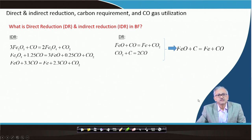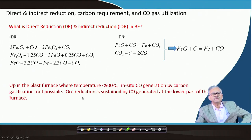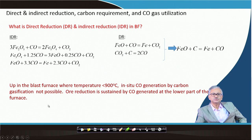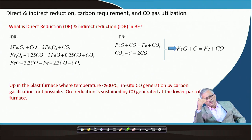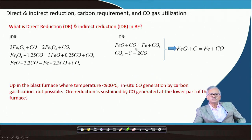In the upper part of the blast furnace where temperature is less than 900°C, in-situ CO generation by carbon gasification is not possible, and oxide reduction is sustained by CO generated in the lower part of the furnace. That is called indirect reduction. In the lower part of the furnace, carbon directly participates in the reduction process by in-situ generation of CO — so it is called direct reduction.